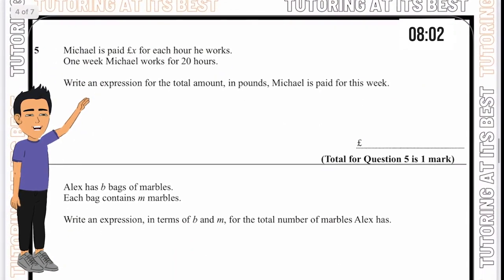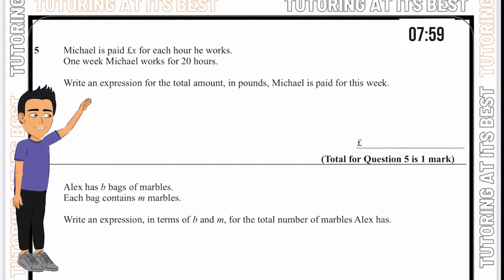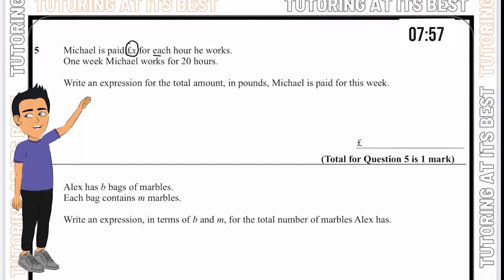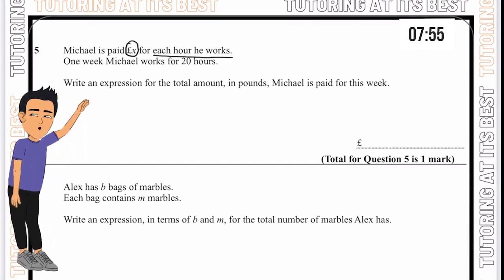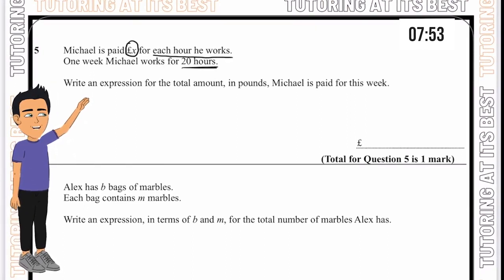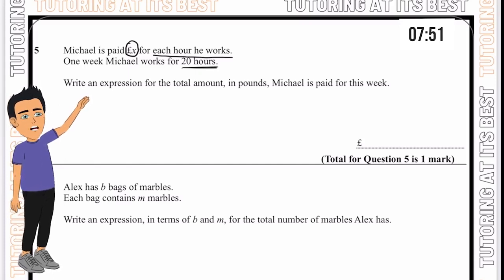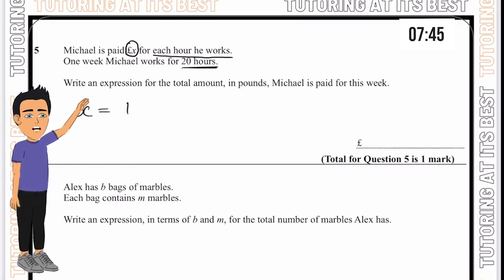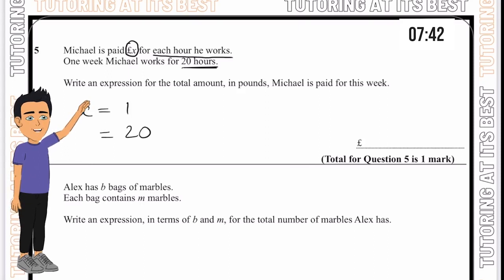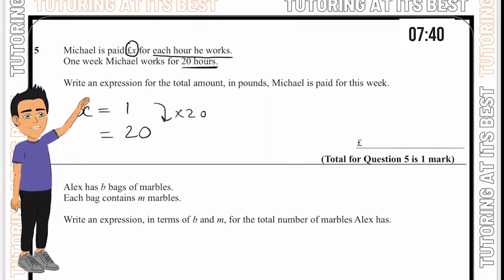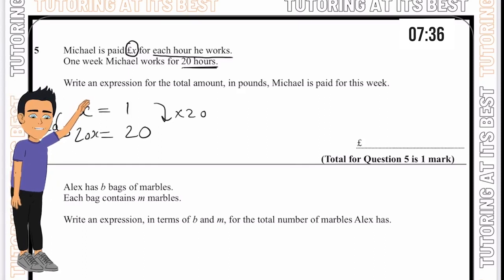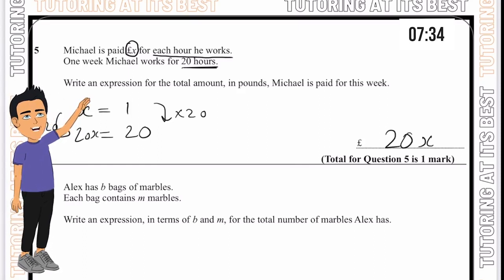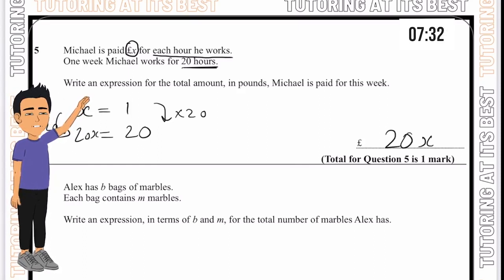Question 5. Michael is paid x pounds for each hour he works. In one week he works for 20 hours. Write an expression for the total amount that Michael is paid. If x equals 1 and we need to find the value of 20, we simply times it by 20. That will give us 20x, and that is our answer.